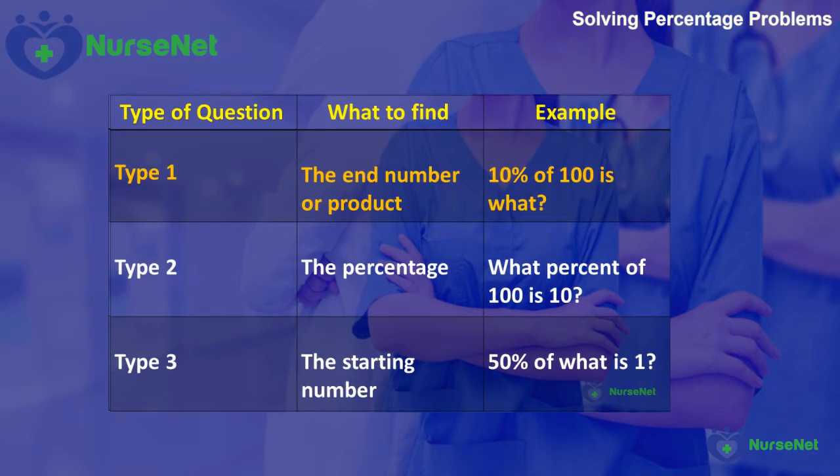Type 1, where we are looking for the end number or the product. So for example, what is 10% of 100? The end number is 10, since 10% of 100 is 10.